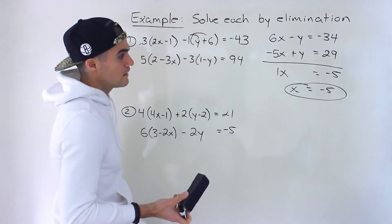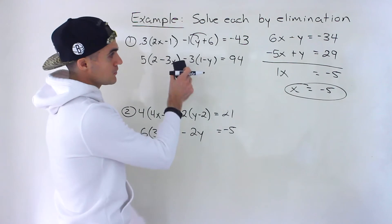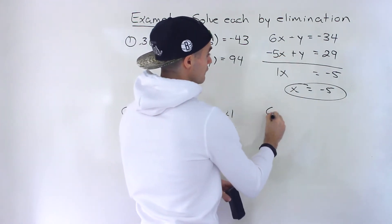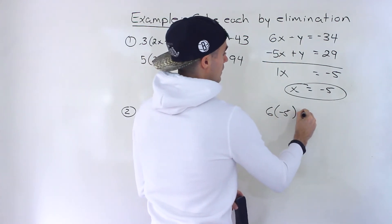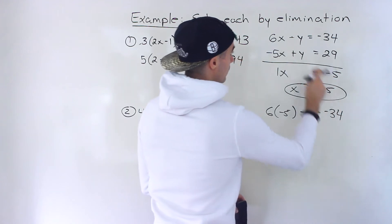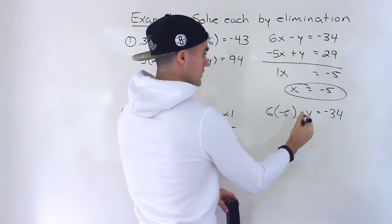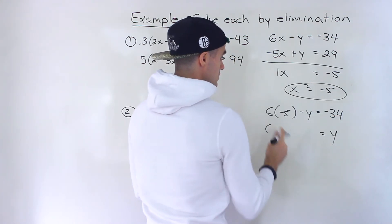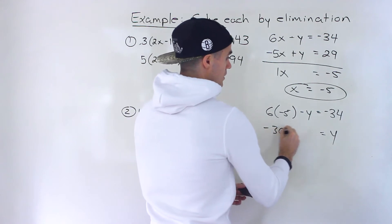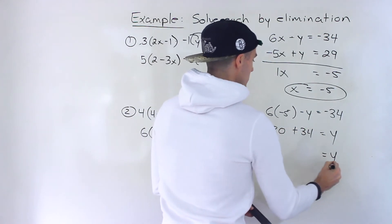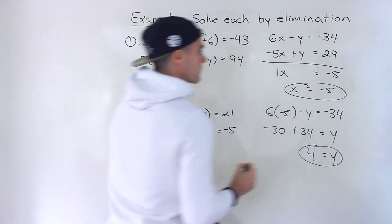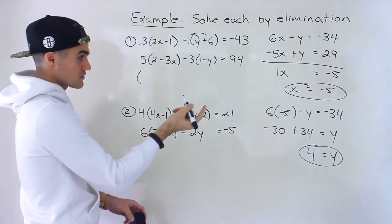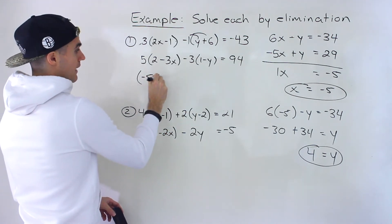To solve for the corresponding y value, we can plug it into one of the originals — we already have them simplified. I'm going to plug it into the first one. Actually, it might have been better to plug it into the second one because the y is already positive there, but it's all good. Let's bring the negative y over, bring the negative 34 over. So 6 times negative 5 is negative 30 plus 34 — y is equal to 4. So the point of intersection, the answer to this, is negative 5 and 4.